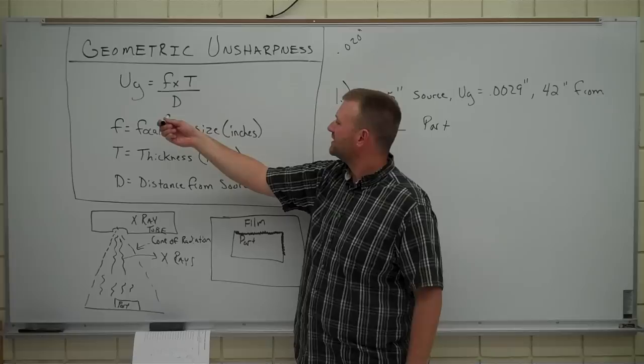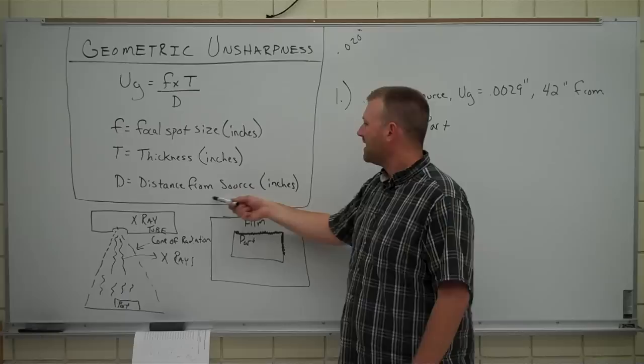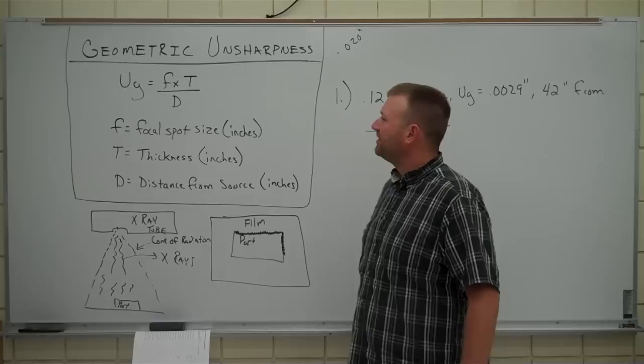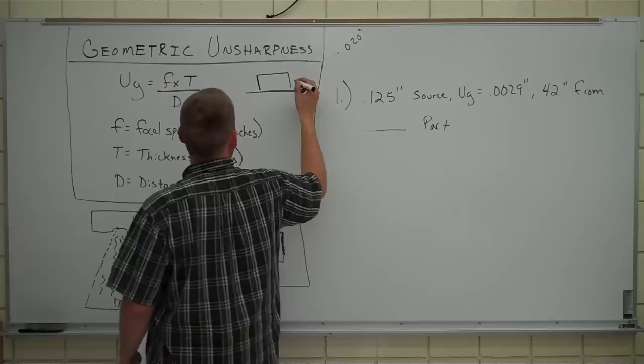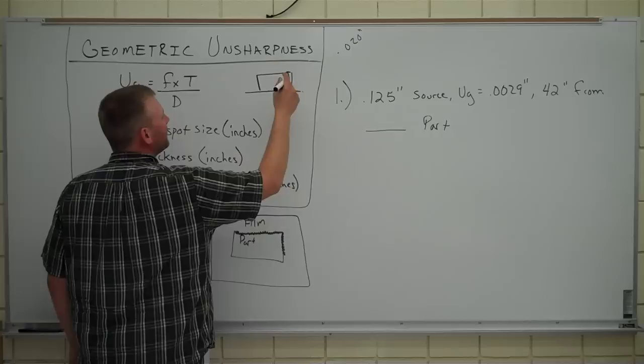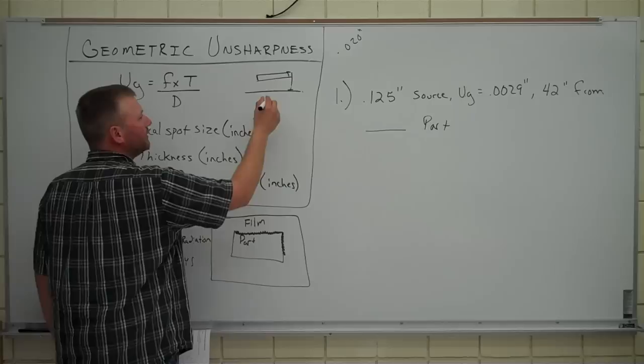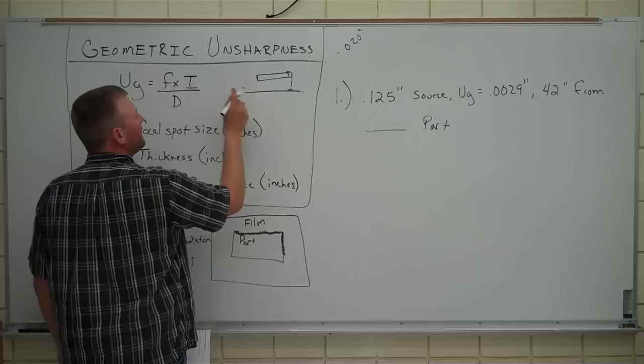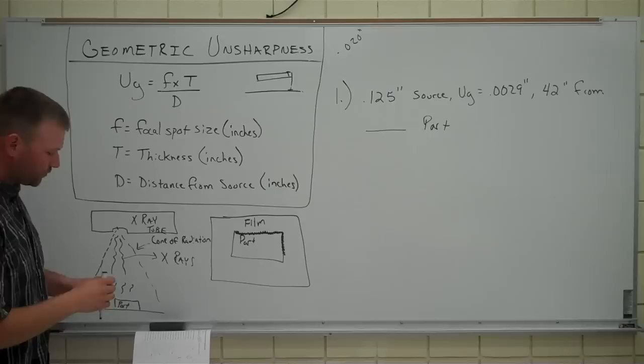UG, or geometric unsharpness, equals F, the focal spot size in inches, times the thickness of the part in inches, divided by the distance from the source in inches. You might not see this as thickness, but that's basically how we're going to use it. It's actually the distance from the top of the part to the film. But some people, just because they're really cool and fancy, will suspend their part in air, so they'll have a gap here between the part and the film. So this thickness value would represent that value there.